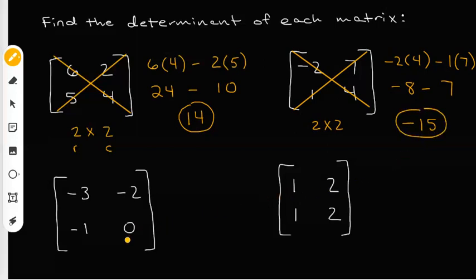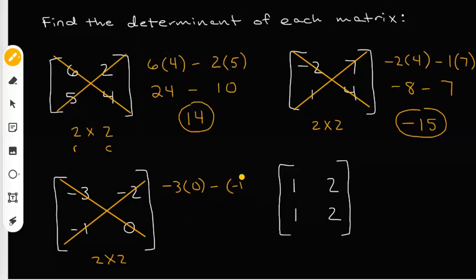Down here I have another two by two. I use the main diagonal first — that's negative three times zero. I put the subtraction sign in the middle, then do the counter diagonal, which picks up negative one and negative two. Negative three times zero gives me zero, because anything times zero is zero. Negative one times negative two gives me positive two. So I have zero minus two, which gives me negative two.